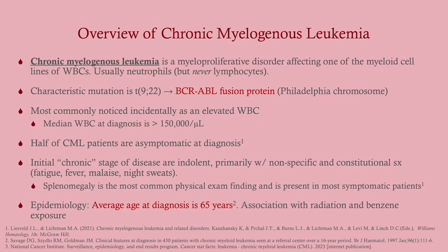CML is a myeloproliferative disorder that affects one of the myeloid lines, usually further down — so these are mature cells. Often these are neutrophils or granulocytes — basophils, eosinophils — but most commonly neutrophils. Basophils are common as well, but it's never lymphocytes, because that would be CLL.